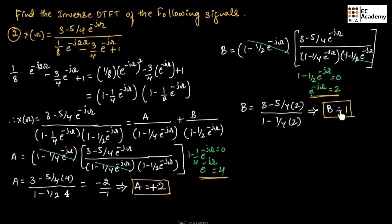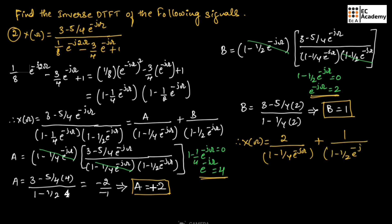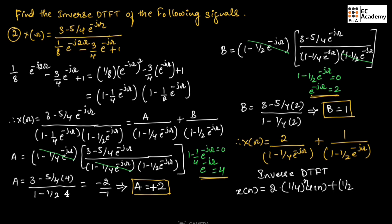We got A = 2 and B = 1. Substituting into the partial fraction expression, X(ω) equals 2/(1 − 1/4 · e^(−jω)) plus 1/(1 − 1/2 · e^(−jω)). Taking the inverse DTFT, x(n) equals 2·(1/4)^n · u(n) plus (1/2)^n · u(n). This is the inverse DTFT for the given sequence. This concludes the problems on inverse DTFT.